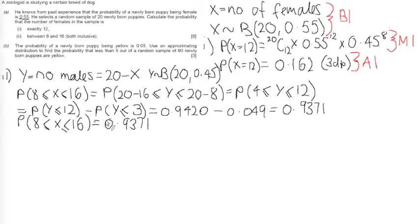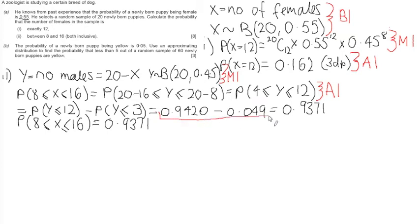How do we get marks on this question? We get a method mark for reversing the distribution. We get an accuracy mark for accurately stating that the probability for females equals the corresponding range for the males. We then get an accuracy mark for each of the correct table readings, and finally an accuracy mark for the final answer.